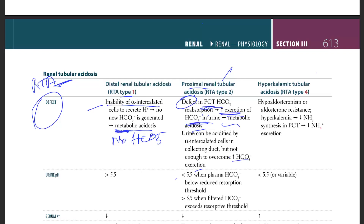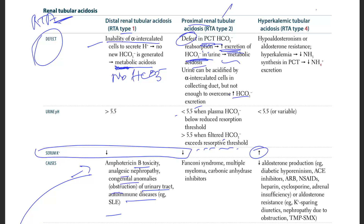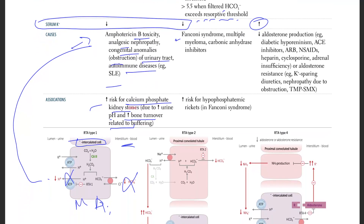Urine pH decreases to less than 5.5 when plasma bicarb falls below the resorption threshold. When filtered bicarb exceeds the resorption threshold, urine pH increases above 5.5. Overall, potassium is low in RTA type 2, and it is only increased in RTA type 4. RTA type 2 is seen in Fanconi syndrome, multiple myeloma, and with carbonic anhydrase inhibitors.